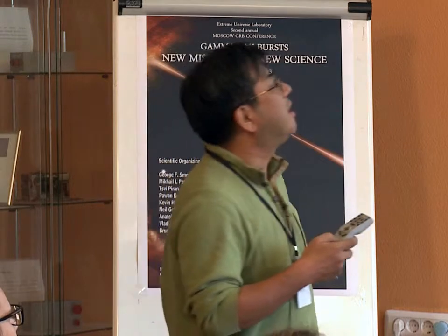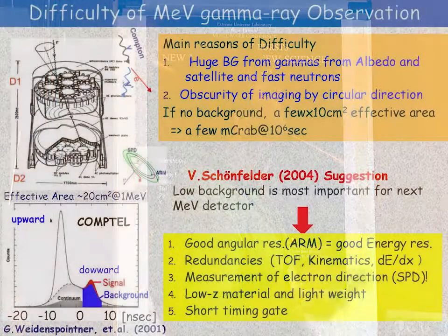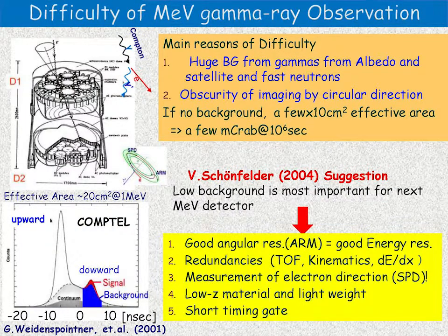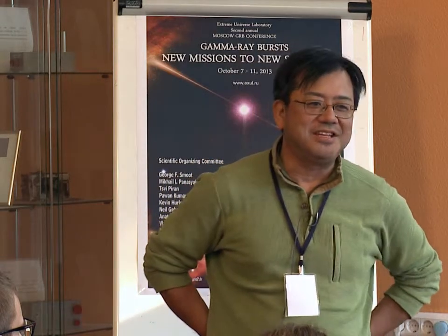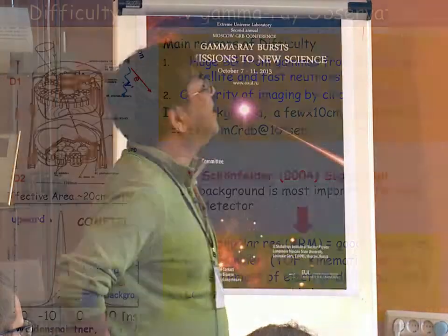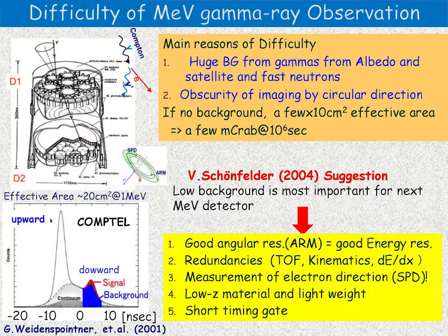There are about two reasons for the difficulty of gamma-ray observations. One is the huge background from the albedo and from the satellite itself, irradiated by cosmic rays. Cosmic rays hit the satellite and atmosphere and generate many isotopes, which produce wave gamma rays. Therefore, in this region, detectors become dominant background sources. Another problem is the difficulty of imaging, because we can only obtain the direction of the incident gamma ray as a circle, not a point.